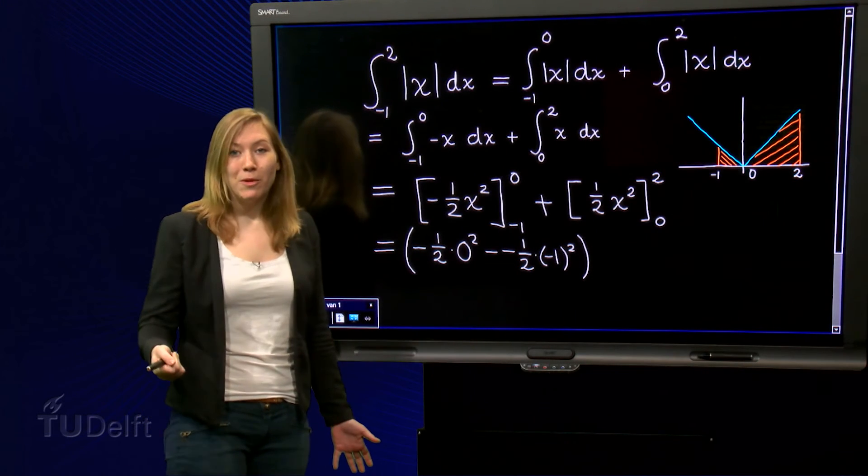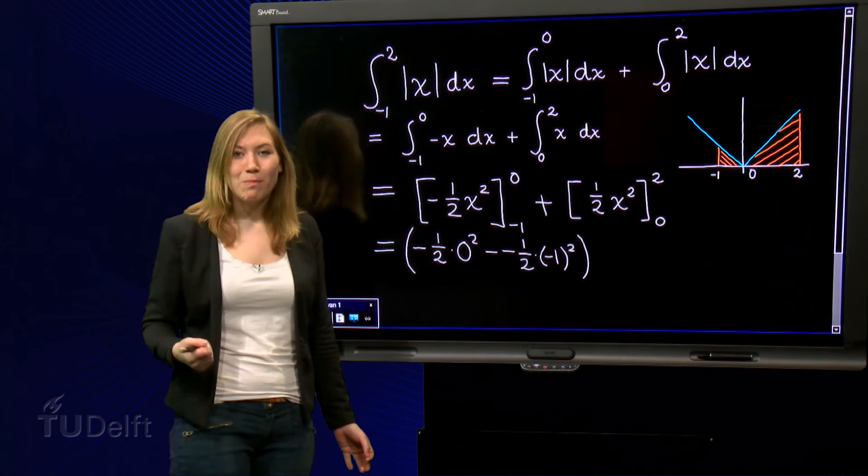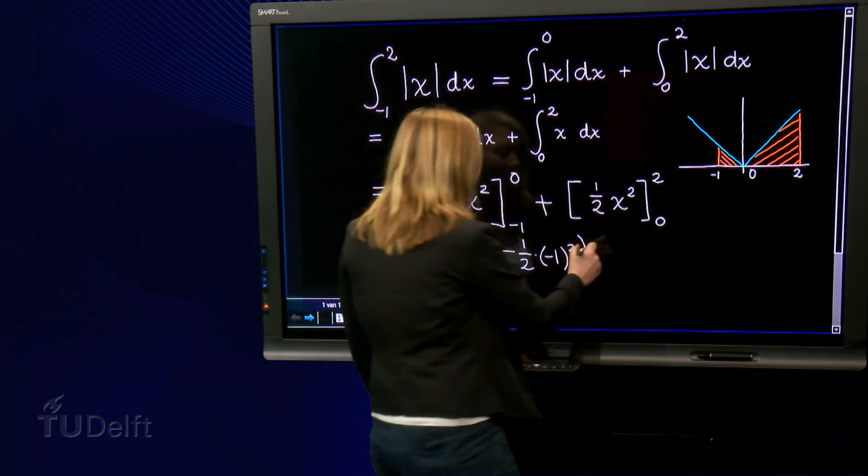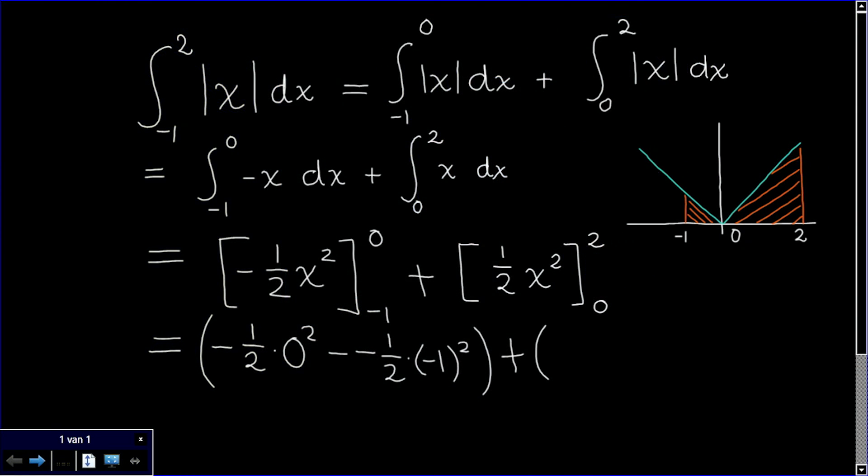The primitive function in the second integral is plus 1 half x squared. Evaluating this gives us 1 half times 2 squared minus 1 half times 0 squared.